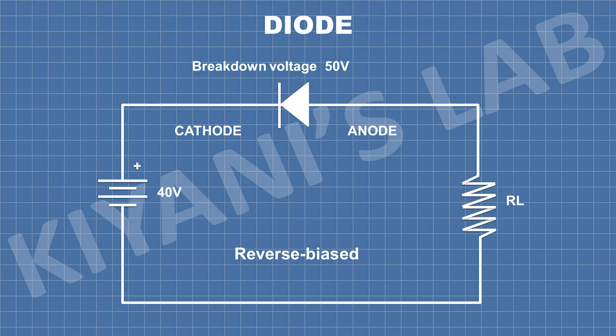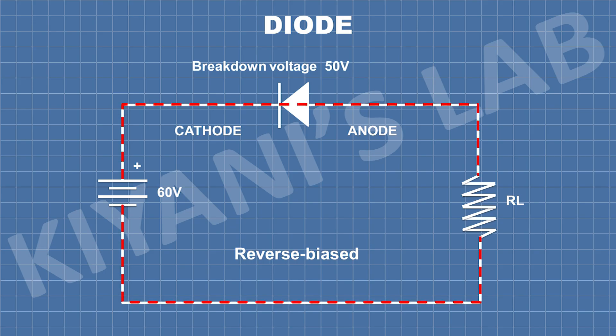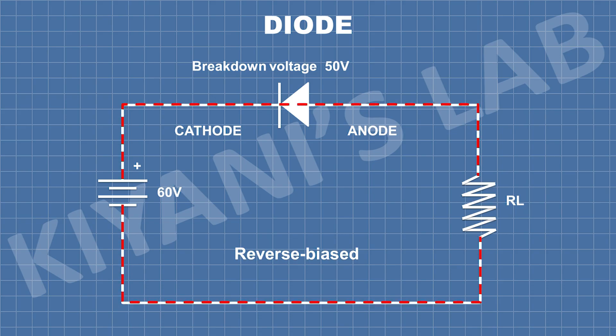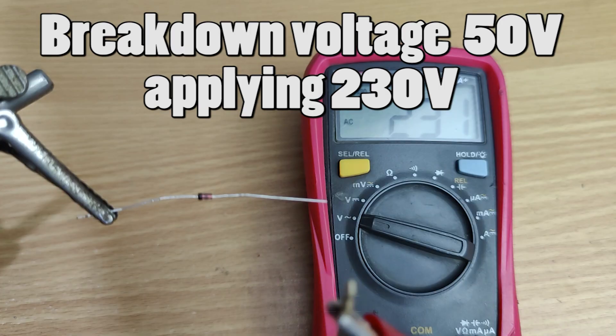Every diode also has a breakdown voltage. In reverse biased, if we apply voltage less than the breakdown voltage, the diode blocks the current from flowing through it. But if we apply voltage more than the breakdown voltage, the current starts flowing through the diode in reverse biased and it will damage the diode.